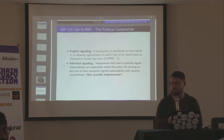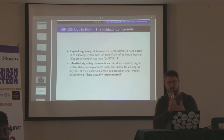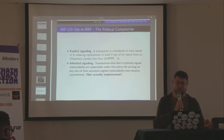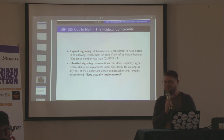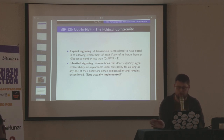We got transaction replacement in with this opt-in thing. My own OpenTimestamps calendars use it to get optimal fees and update the Merkle tree of transactions being timestamped — they start off at the minimum possible fee, and every time a new block comes in as an indication the fee was too low, they double-spend it with a higher fee, and eventually it gets mined. It's a pretty good technique if you want to pay the minimum possible price and are willing to wait.